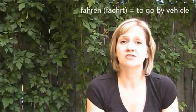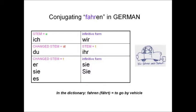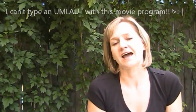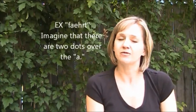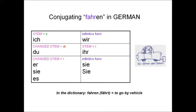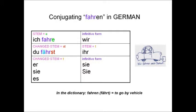This is the verb fahren. Fahren means to go by vehicle. If I were to look it up in the dictionary, it would say fahren, and then it would say fährt — you'll notice there are two dots over the A, that's called an umlaut. In English, that's the same thing as adding a silent E after the letter A, so F-A-E-H-R-T. For the ich form, we add the stem plus an E — ich fahre. For the du form, we add the umlaut because it's a strong verb, so du fährst. Notice the pronunciation change — it went from A to er. For the er, sie, and es forms, we again add the umlaut, so er fährt.